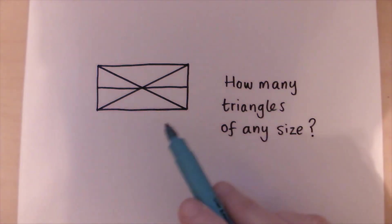So if you have a look at this diagram, how many triangles of any size are there? You could have any size triangles. I want you to count up and see how many there are. So pause the video while you have a go and then unpause to find out the answer.